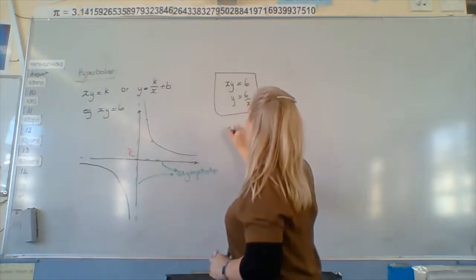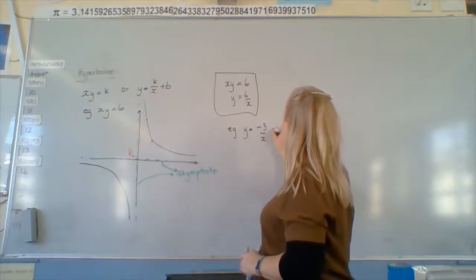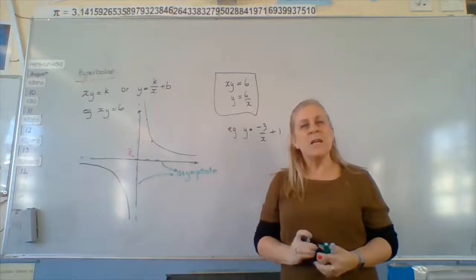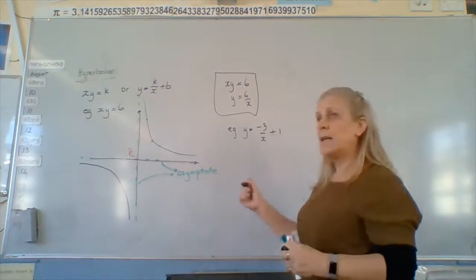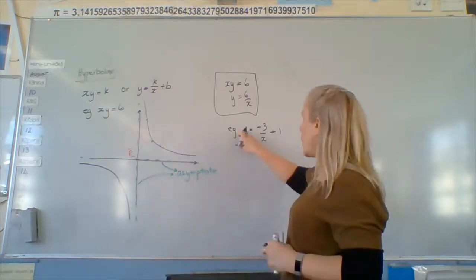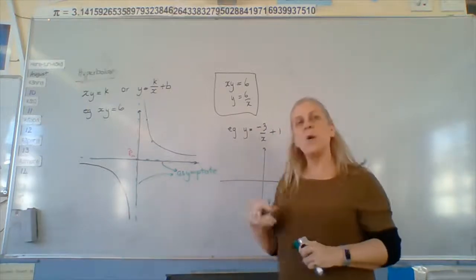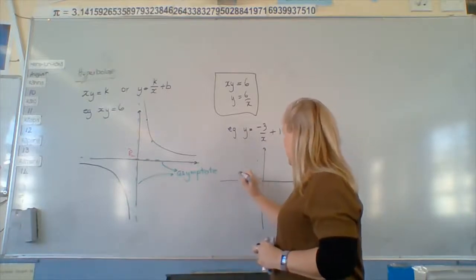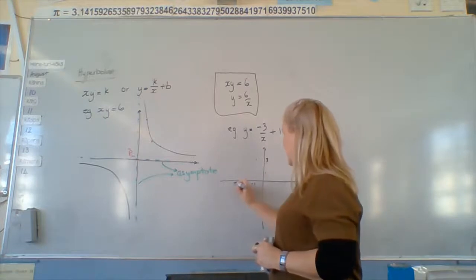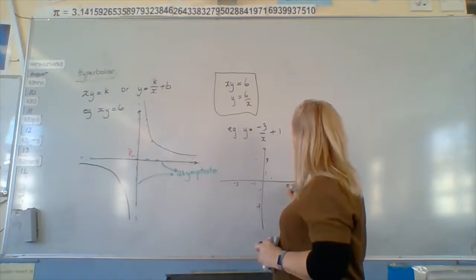So if we've got y equals, let's do negative three over x minus one. We draw this graph in parts. So we're going to start off with drawing the basic, y equals negative three over x. We're not going to actually draw it, we're just going to dot it. So I want all the things that multiply to give negative three. Right? Negative one, three. One, negative three. One, negative three. Negative one, three.